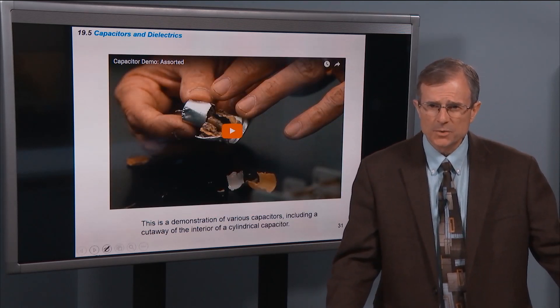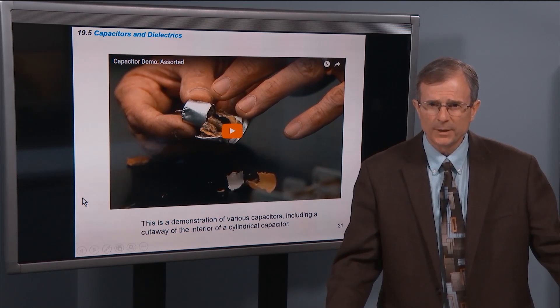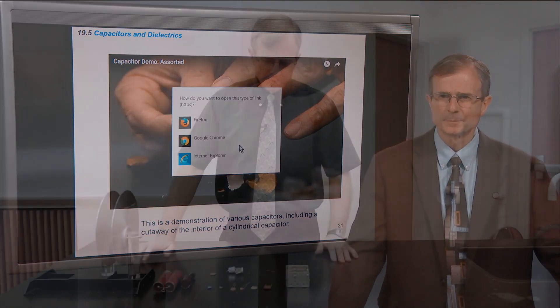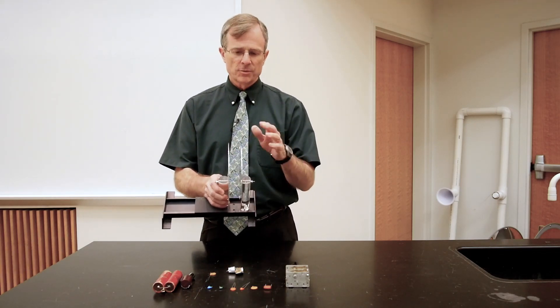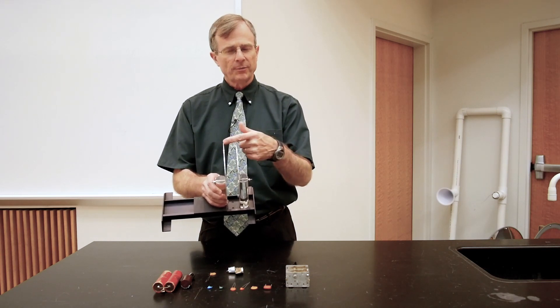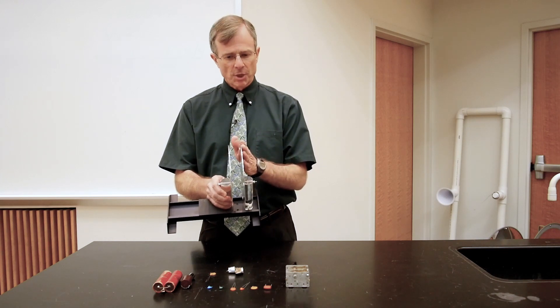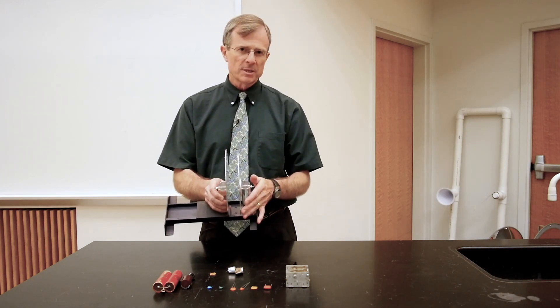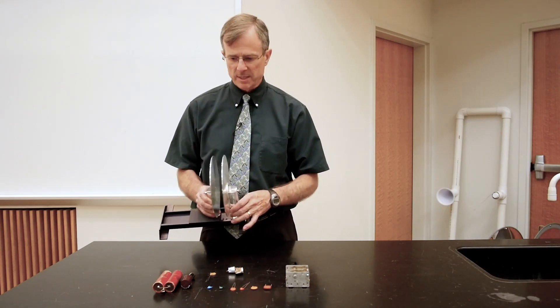So this is a demonstration of various capacitors. These are capacitors. What's the basic idea for a capacitor is just two metal plates, charge one positively, the other one negatively, and you have an electric field that goes between them. And you can store energy in the charge on the plates. Alternatively, you can think about the energy being stored in the electric field between the plates.